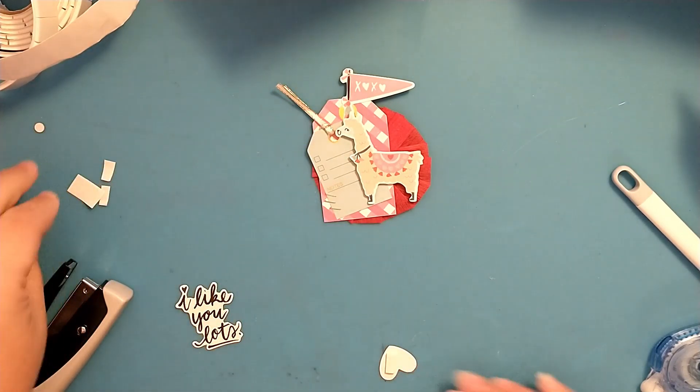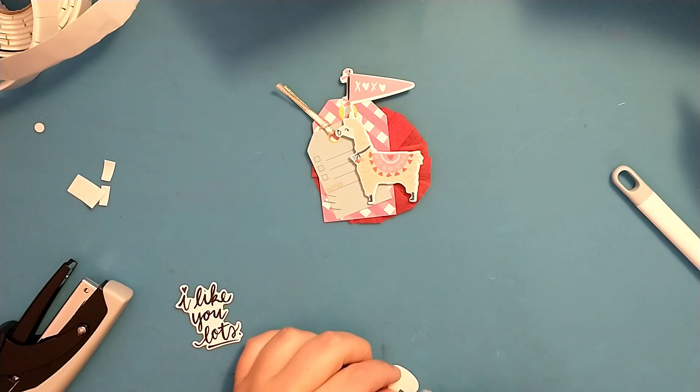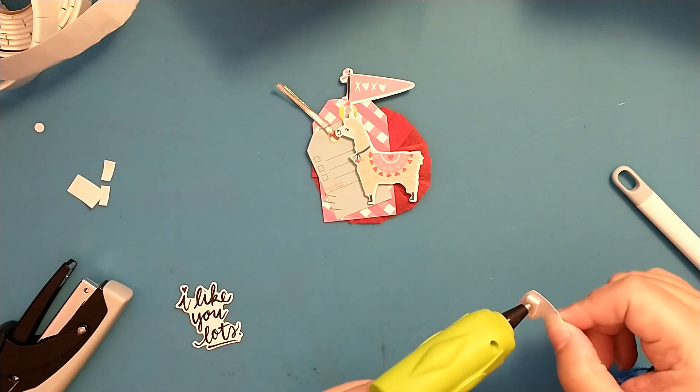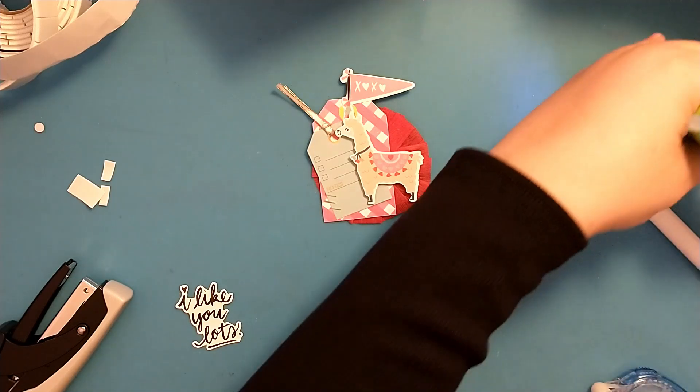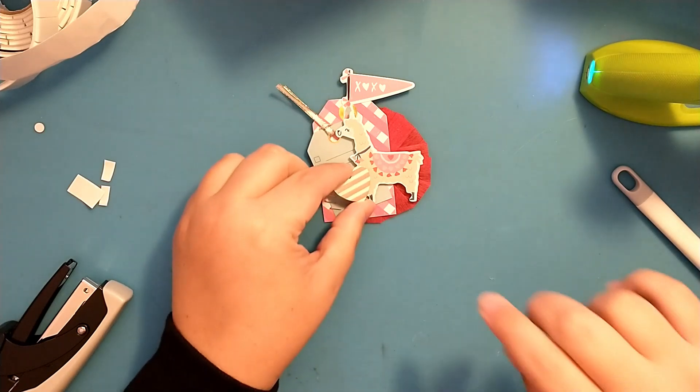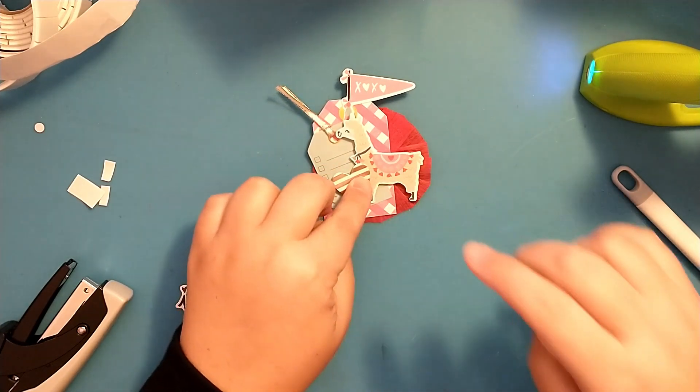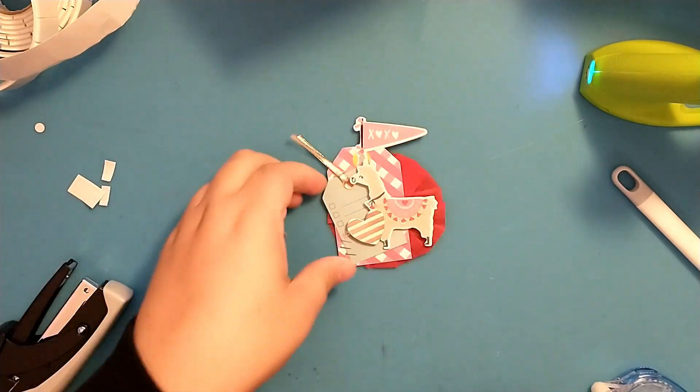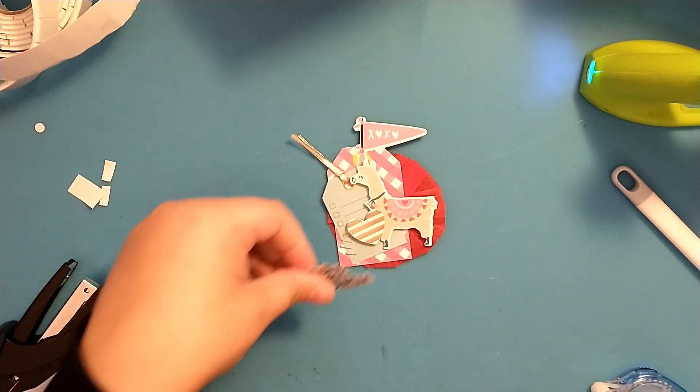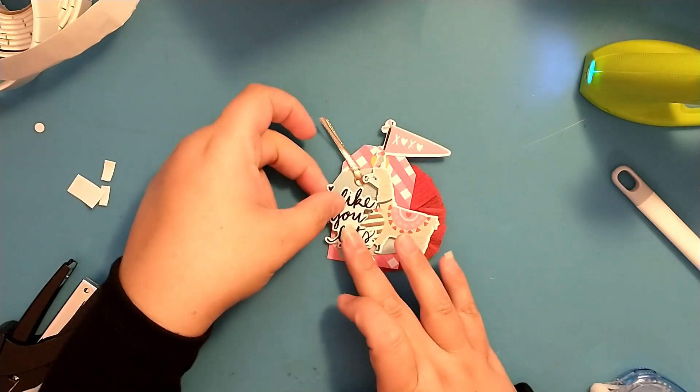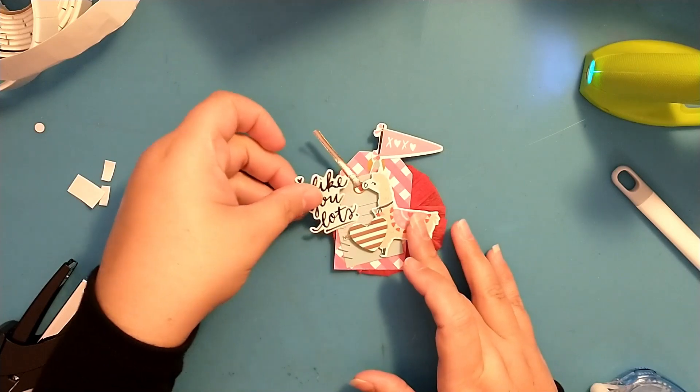So let's see. I'm going to add some foam tape on the one side and then I'm going to add adhesive on the other. I'm going to put that there. Lots of glue strings here. And then we have this I like you lots. So let's see, don't see much of that heart.